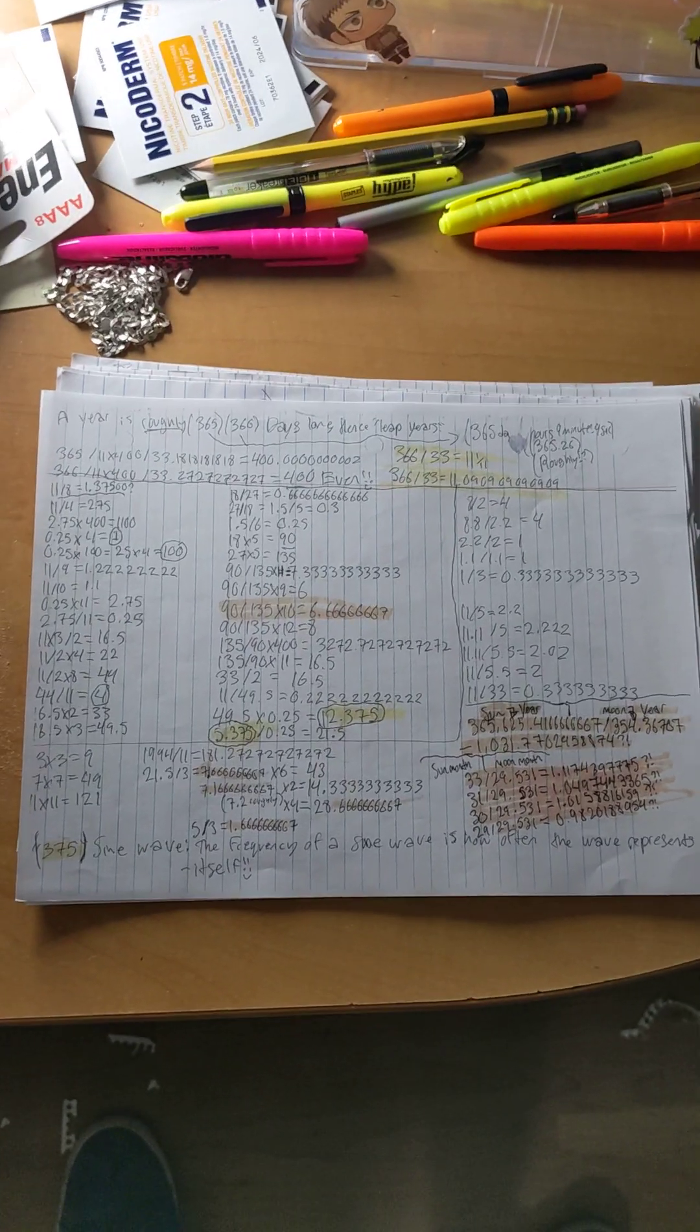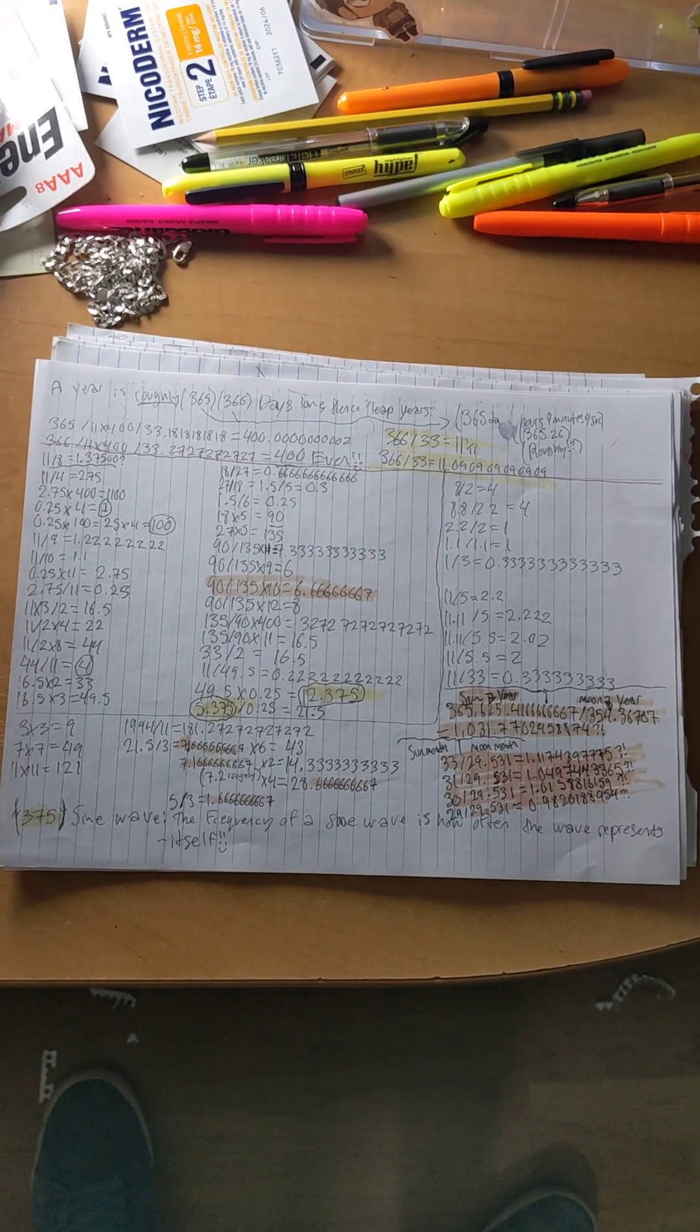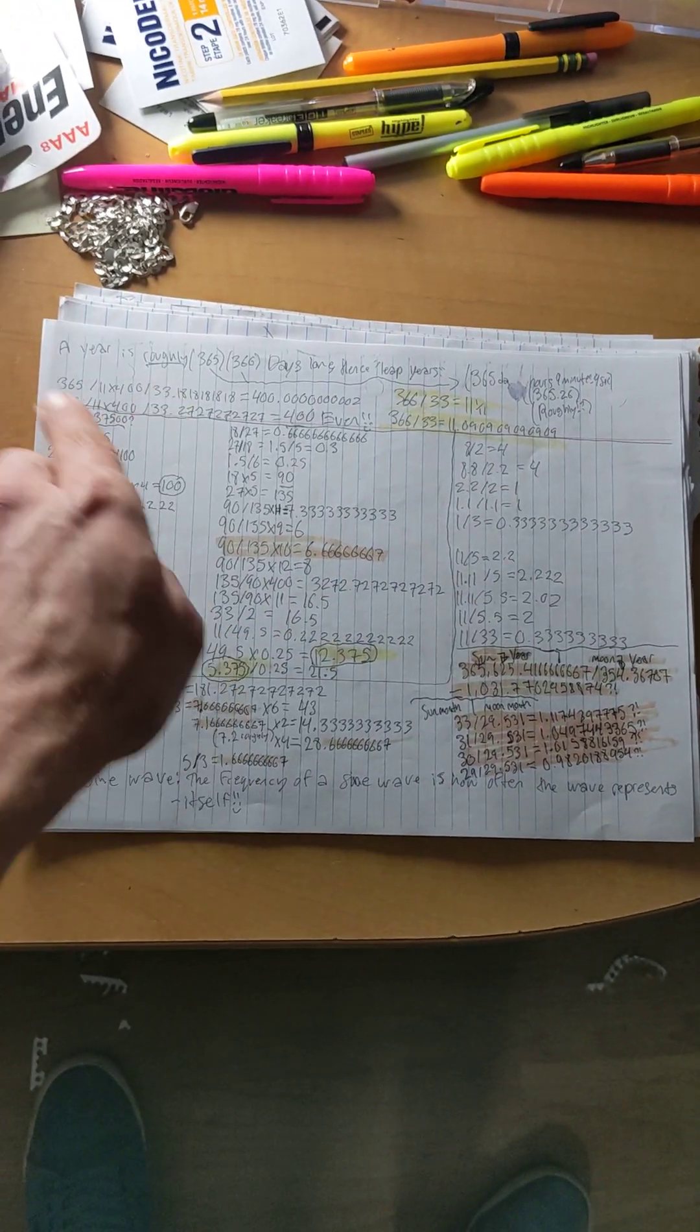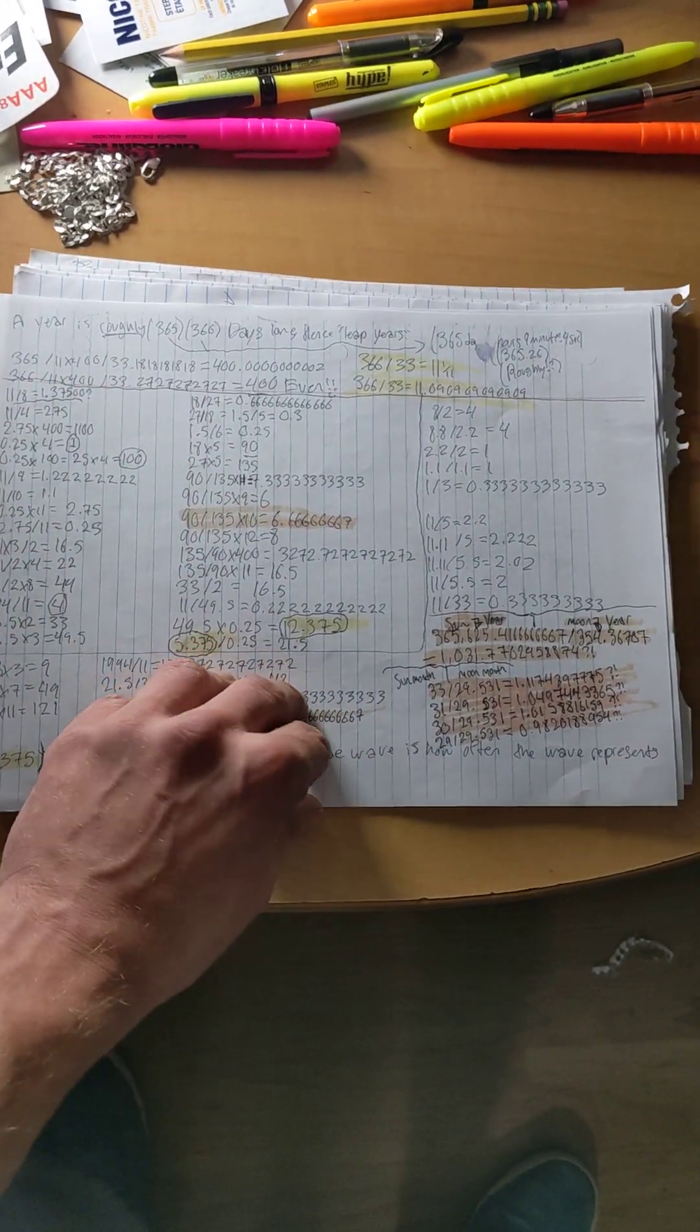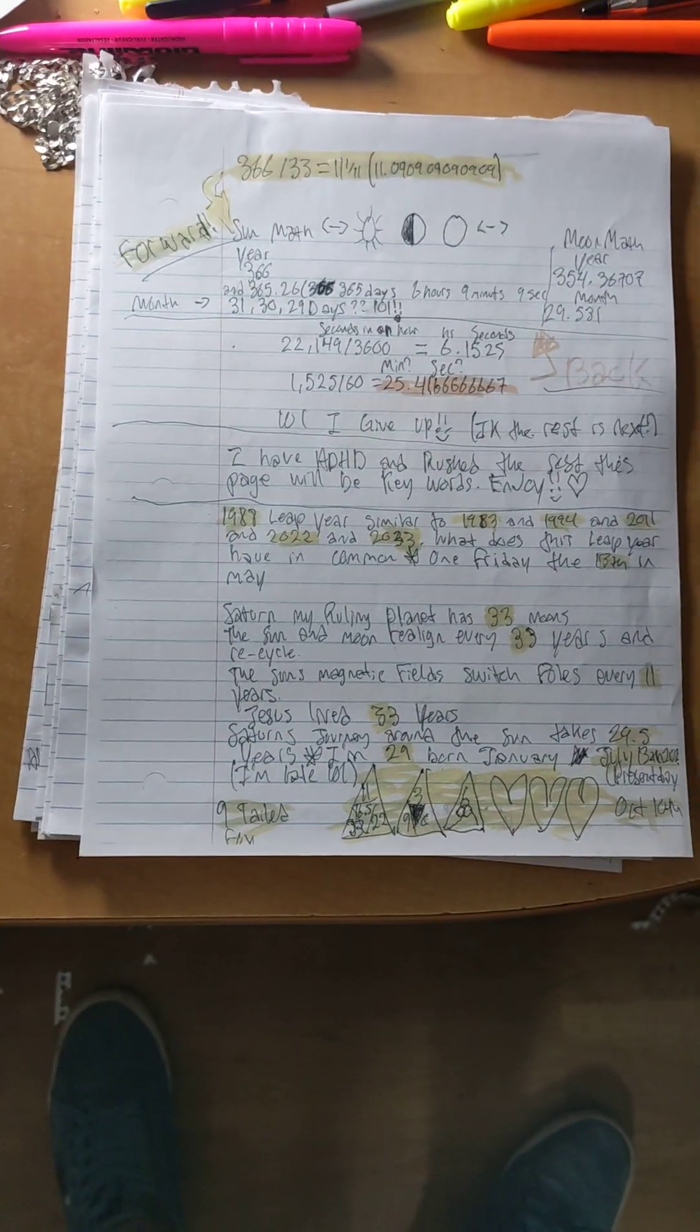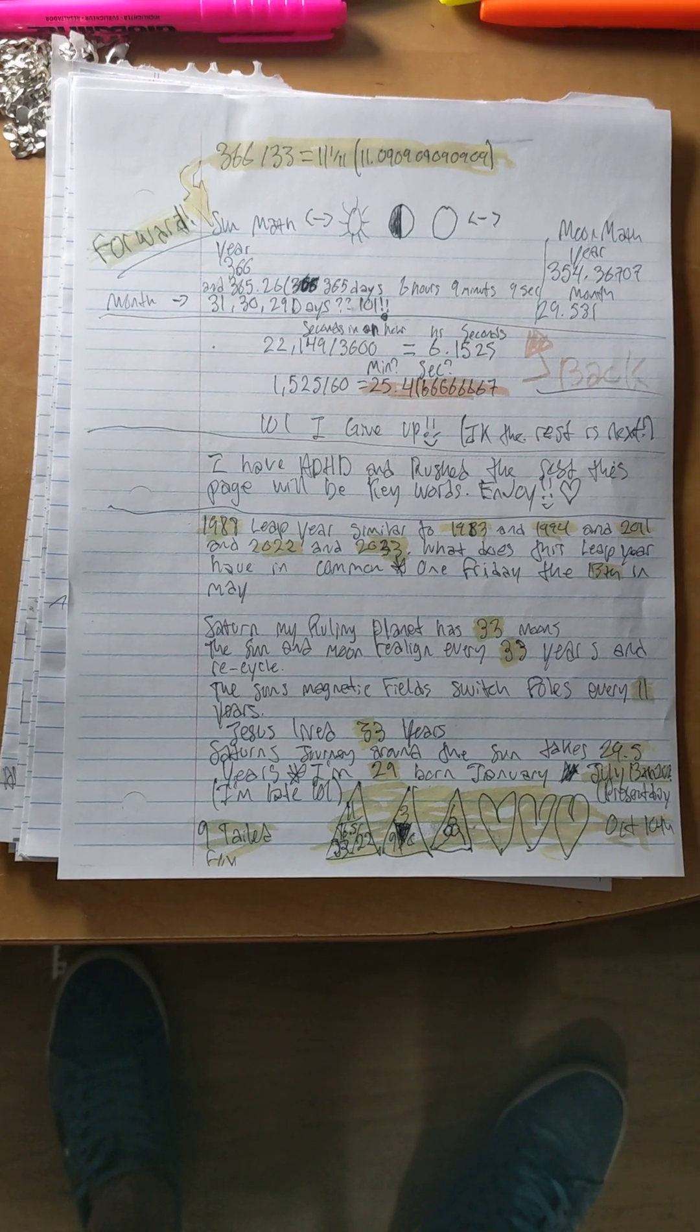Because I discovered how to link the sun math with the moon math for time and make a real year. No more leap years, no more other years. It's all one now. People should have listened, but they didn't, so I had to prove it. But I guess I'm happy, so thank you.